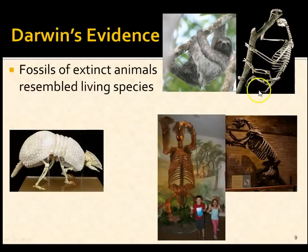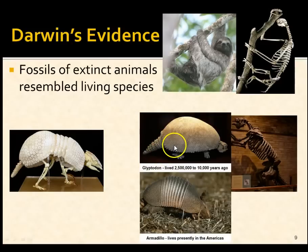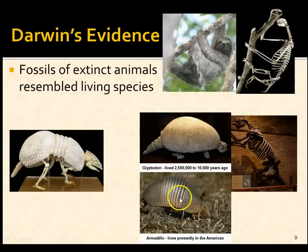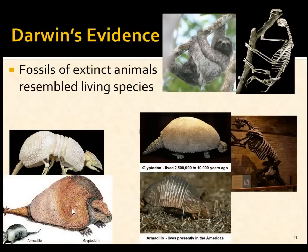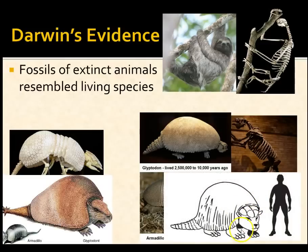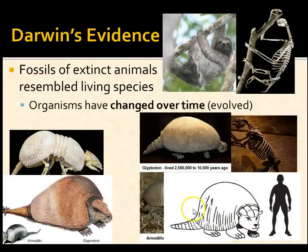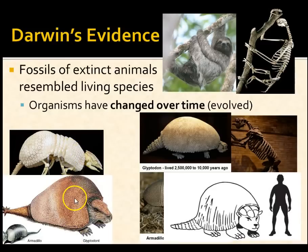There's also the three-banded armadillo and an extinct creature called the Glyptodon, which lived from about 2.5 million years ago to 10,000 years ago. The Glyptodon's shell resembled that of living armadillos, though it was roughly the size of a small Volkswagen. There were many similarities in anatomical structure, implying that organisms have changed over time and that species are not eternal.